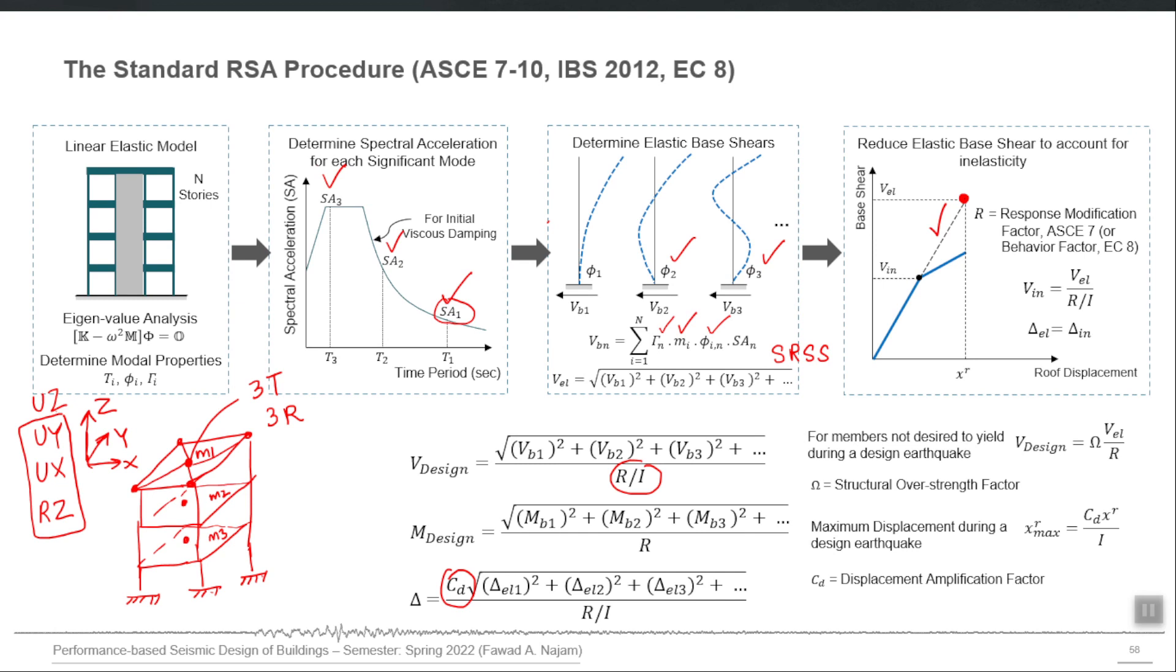But this will be changed if we include vertical mass. In that case this uz mass will also be included in the mass matrix formulation, and the program will calculate vertical modes also. So there will be a mode in which the model will be going up and down in that mode shape. There can be a vertical mode shape also if you include vertical mass in the analysis, and ETABS provides you that option. You can simply click on one checkbox to include the vertical mass in the analysis.